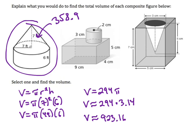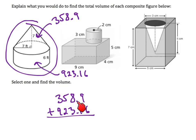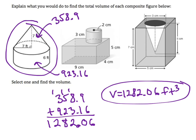I'm going fast because this is review. Now I have the volume of the cylinder — what am I going to do to figure out the volume of the whole shape? Add them together: 358.9 plus 923.16. Line up my decimals and add them up. The volume is 1,282.06 cubic feet.